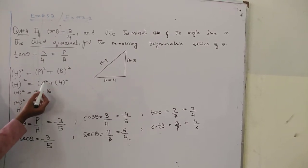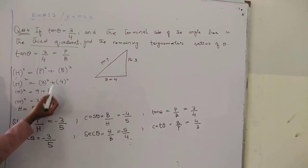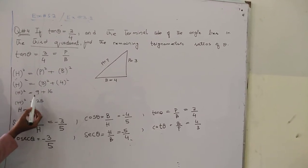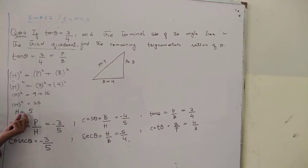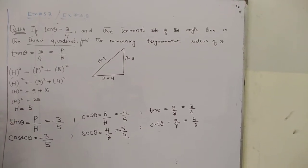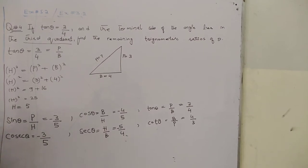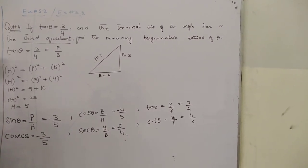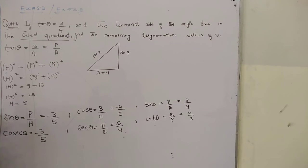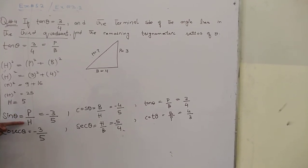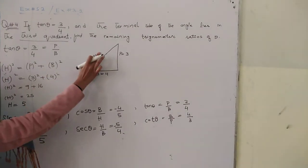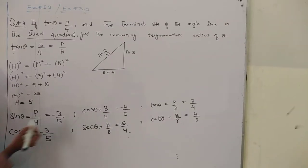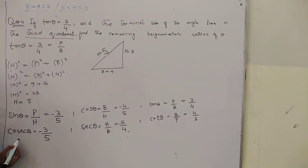3 squared is 9, 4 squared is 16. 9 plus 16 equals 25. And if you take the square root, hypotenuse equals 5. But these are in the third quadrant.